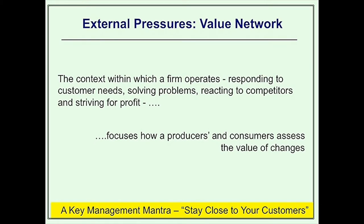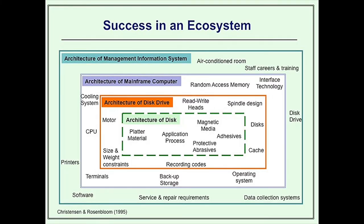Firms are responding to their best customers' needs, solving the problems they have, and reacting to mainstream competitors as they strive to deliver a return to their shareholders. Effectively they are following that key management mantra of staying close to your customers and responding to their needs. And it is not just the requirements of your direct customers — often a firm is embedded in a wider ecosystem. Take for example a disk drive manufacturer: there are many elements to your disk drives and the architecture has to fit into the requirements of your direct customers, perhaps mainframe computer manufacturers.